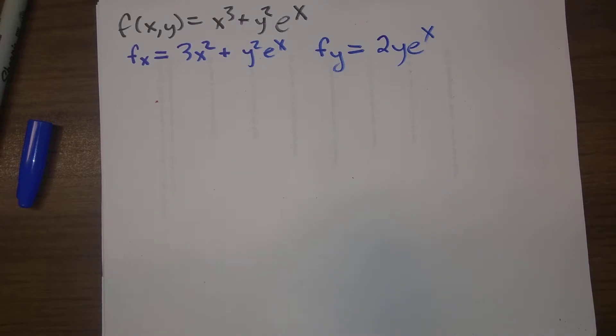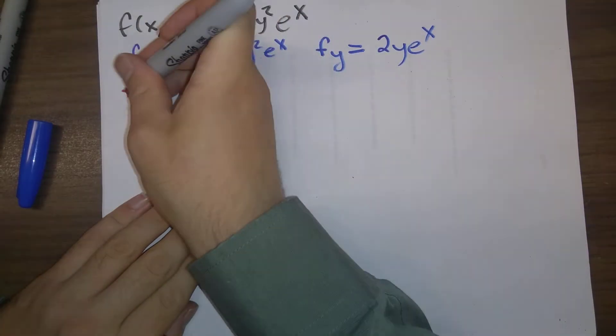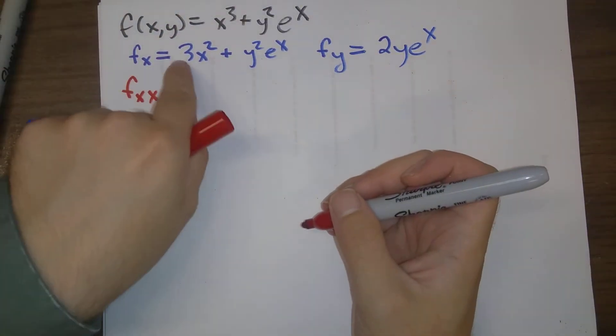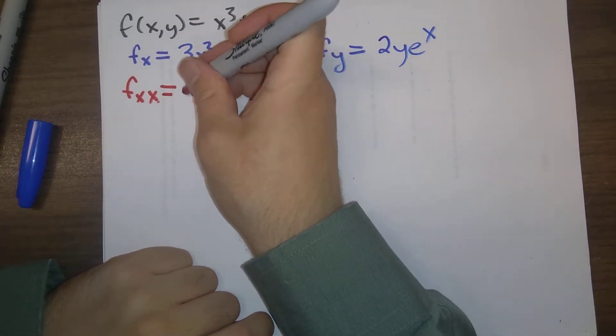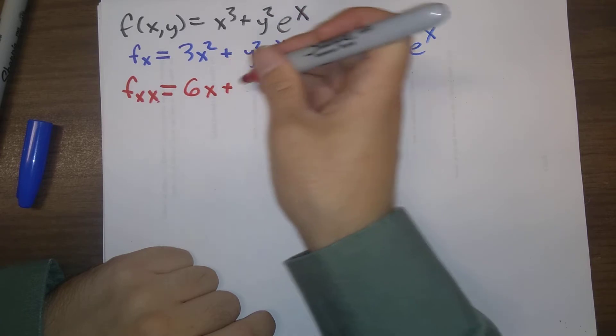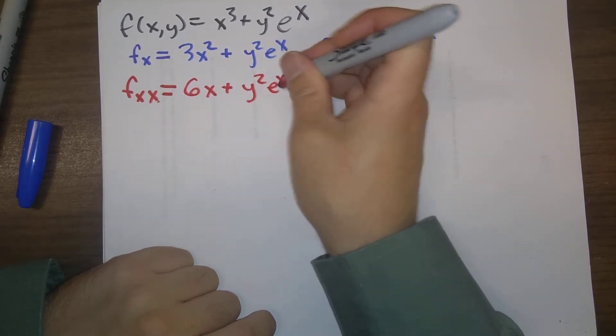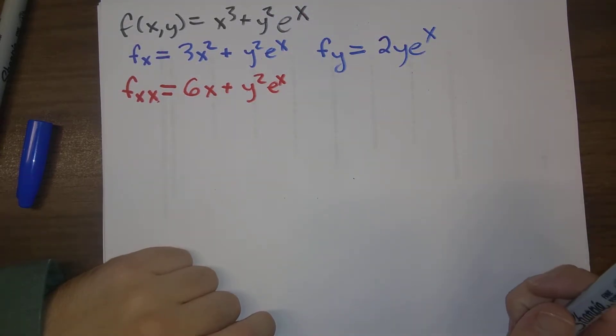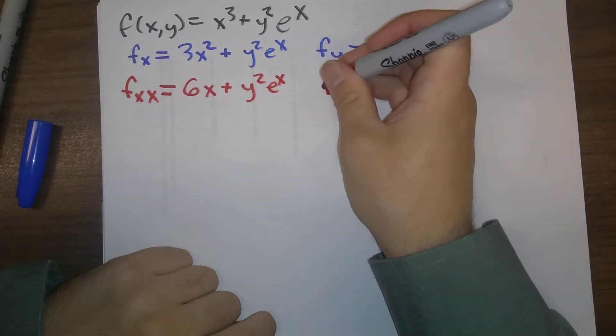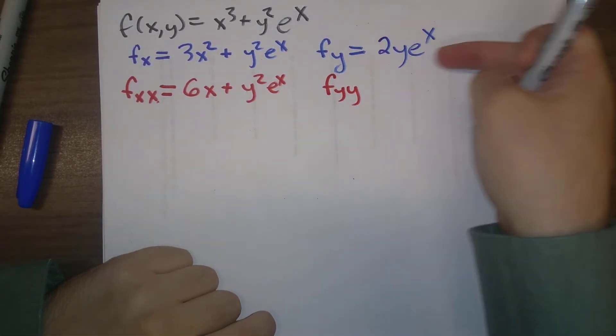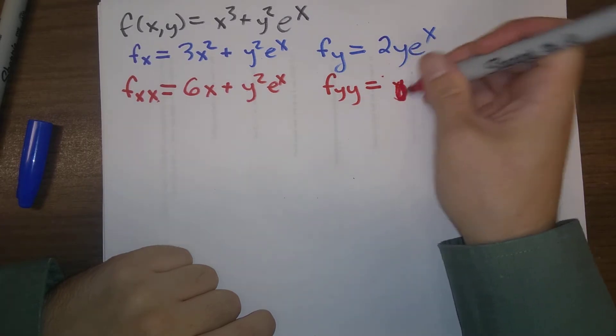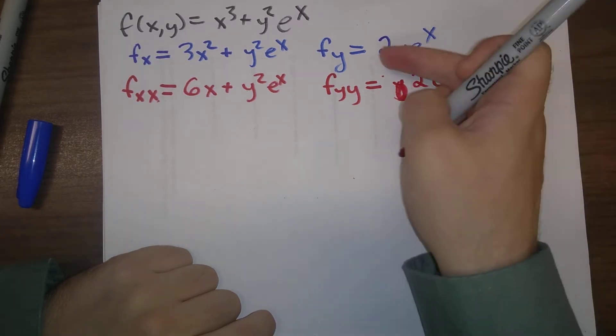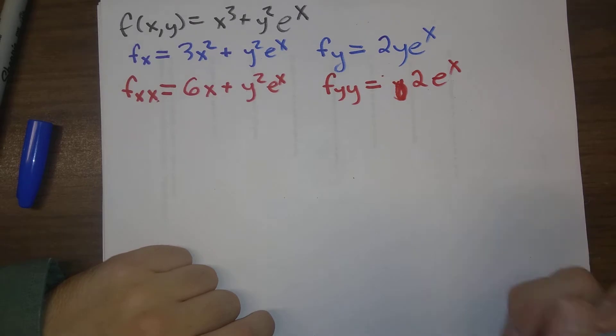So now on for the second-order ones. f_xx, we need to take an x derivative of the f_x, and that's going to be 6x + y^2 e^x. We can take f_yy, now we take a y derivative of this, and we get 2e^x, the derivative of 2y is 2, e^x looks like a constant.